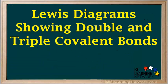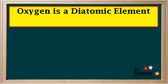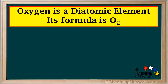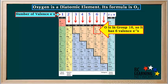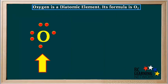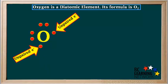So far, all the covalent bonds we've looked at have involved the sharing of two electrons, or one electron pair. Sometimes atoms share more than one pair of electrons. An example is the element oxygen. It's one of the diatomic elements, which means it has two atoms per molecule, so its formula is O₂. Oxygen is in group 16, so it has six valence electrons. We're accustomed to seeing oxygen's Lewis diagram like this.